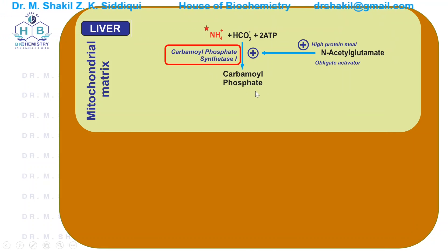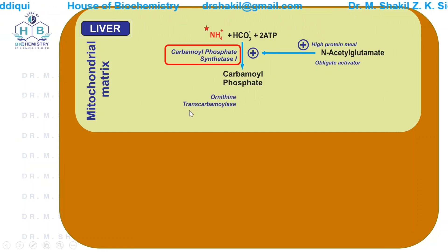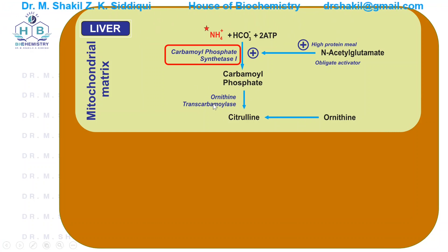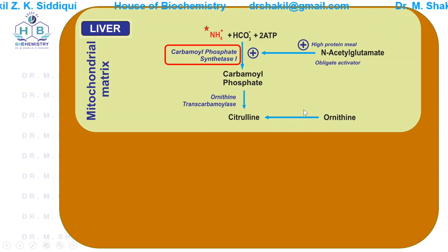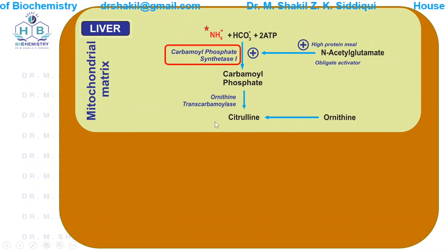Once carbamoyl phosphate is formed, another enzyme acts on it — ornithine transcarbamylase, or OTC. This enzyme condenses ornithine with carbamoyl phosphate to form citrulline. Remember, this entire reaction takes place inside the mitochondria.